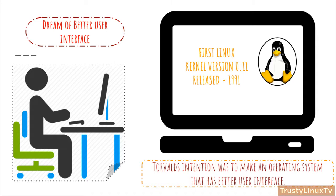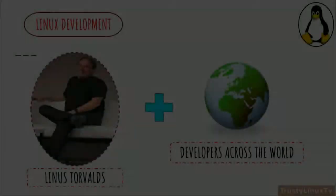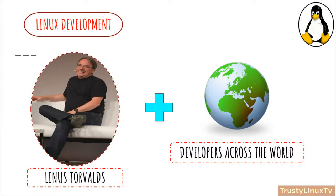The first Linux kernel version 0.11 was released in the year 1991 and it became the first Linux kernel distros system. Linux is named after Linus Torvalds, the creator of the Linux kernel. However, it was later developed by Torvalds and several other programmers around the world.